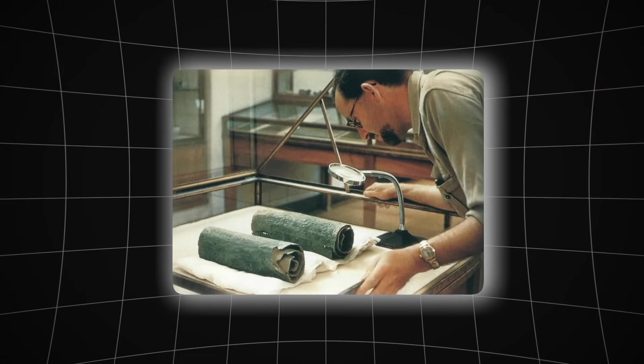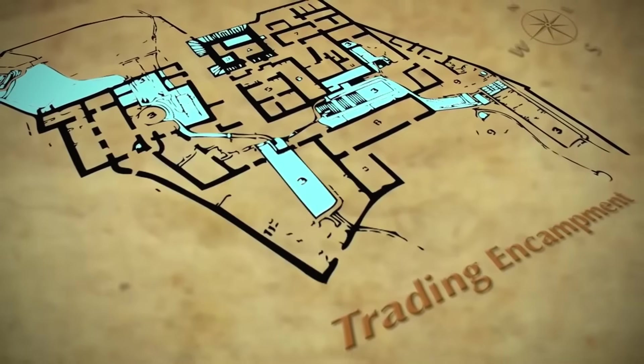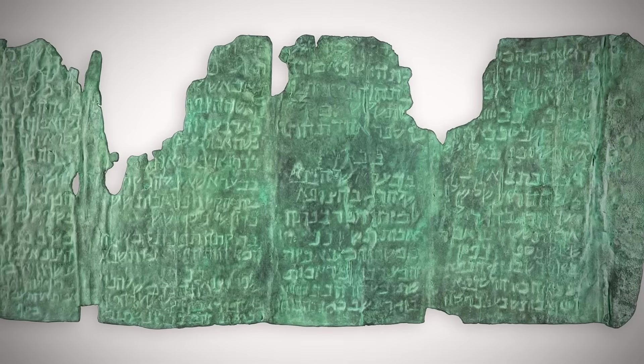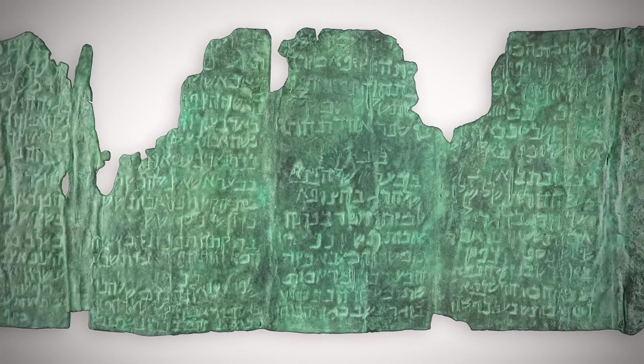The Copper Scroll has always been an anomaly among the Dead Sea Scrolls. Engraved on metal instead of written on parchment, it lists 64 locations of buried treasure. But what if it contains something far more valuable than gold and silver?